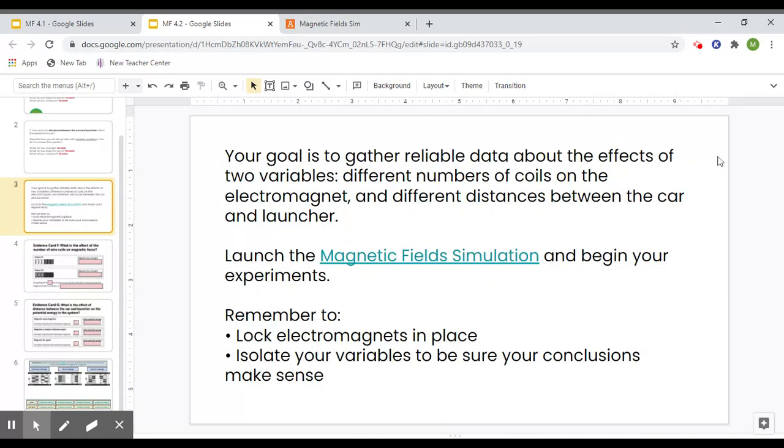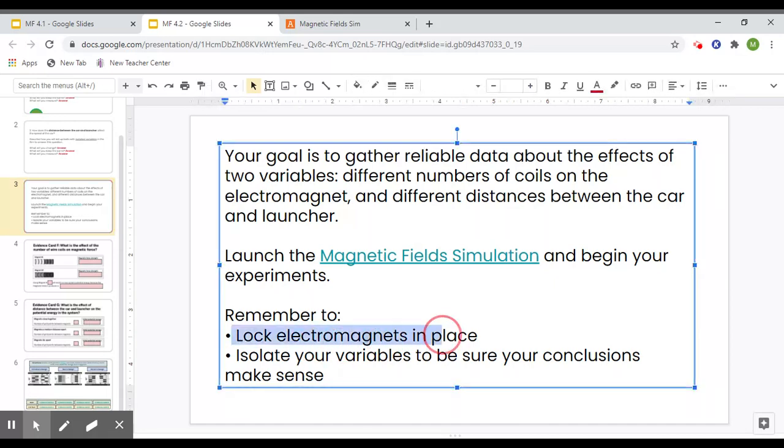Your goal is to gather reliable data about the effects of the two variables. Launch the simulation and begin your experiments. Remember to lock the magnets in place so that they do not move, and isolate your variables to make sure your conclusions make sense and are valid.